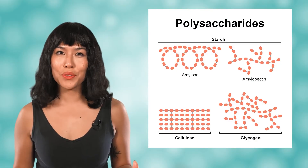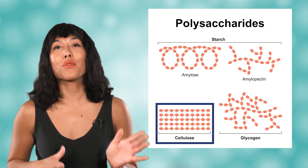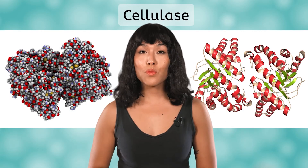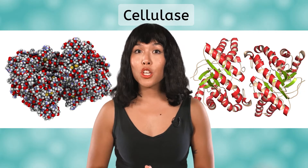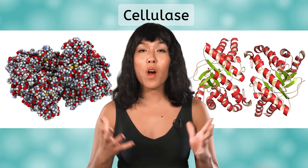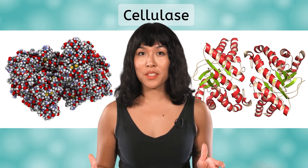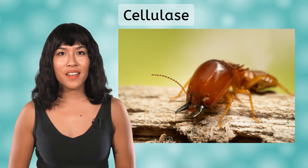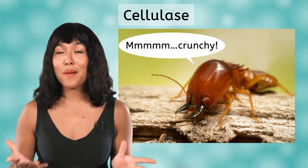Starch is not the only polysaccharide produced by plants that we consume in our food. The other one is cellulose, which is also made of glucose rings, but has a straight shape rather than a branching shape like starch. Cellulose requires a different enzyme, cellulase, to be broken down. Humans do not have the cellulase enzyme, which is why we cannot break down cellulose. But remember, cellulose is still valuable to us because it acts as a fiber. Termites, on the other hand, do have cellulase, which allows them to digest wood made of cellulose.